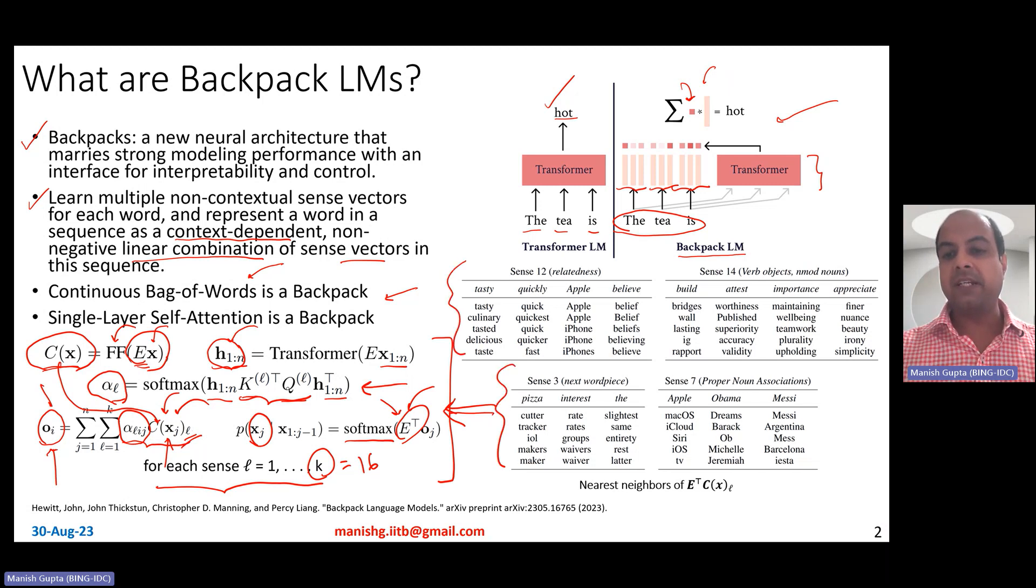Now, while doing this, of course, you learn sense vectors per word, and this is how the sense vectors look like. So of course, you can actually look at sense vector 12 for every word. So you could look at sense vector 12 for tasty, 12 for quickly, 12 for apple, 12 for believe. So what you observe is that there is a relationship between the same index of the sense vector across every word. So for example, here, if you look at tasty, tasty, tasty, culinary, tasty, tasty, tasty is delicious and so on, they seem like generic synonyms. But if you look at the sense three, for example, it is next word be sense. So for example, pizza cutter, pizza tracker, and so on, or interest rate, or the slightest, the same, and so on. So words which occur next to each other.